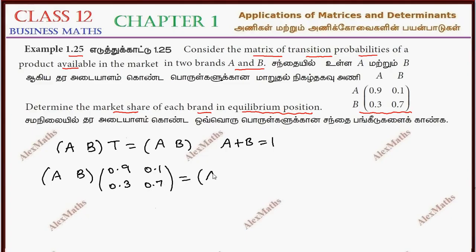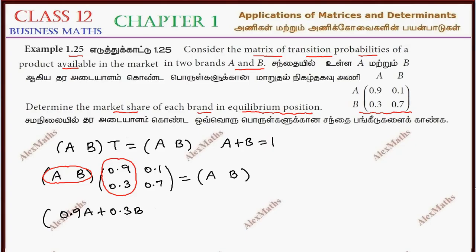We equate [A, B] to [A, B] using matrix multiplication. Taking the first row with the column, we get 0.9A plus 0.3B. For the next element, we get 0.1A plus 0.7B. This equals [A, B].